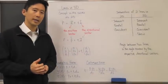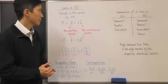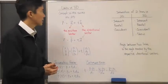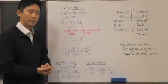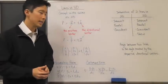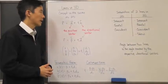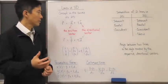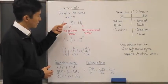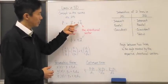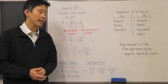The vector form of a line is going to be exactly the same as the two-dimensional case. The concept is the same: a resultant vector pointing to a point on the line is given by r = a + t·b, where b is the directional vector. So we have the position vector plus the scalar multiple of the directional vector, which establishes the direction of the line.